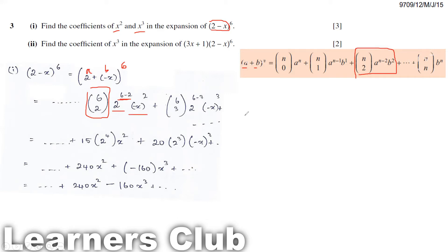The next term is going to be nC3, a to the power n minus 3, b to the power 3. Why? Because I need my x term to be cube, so b term should be cube. So n is 6, so 6C3, a is my 2 here, so 2 to the power (6 minus 3), b cube, b is minus x, whole cube.